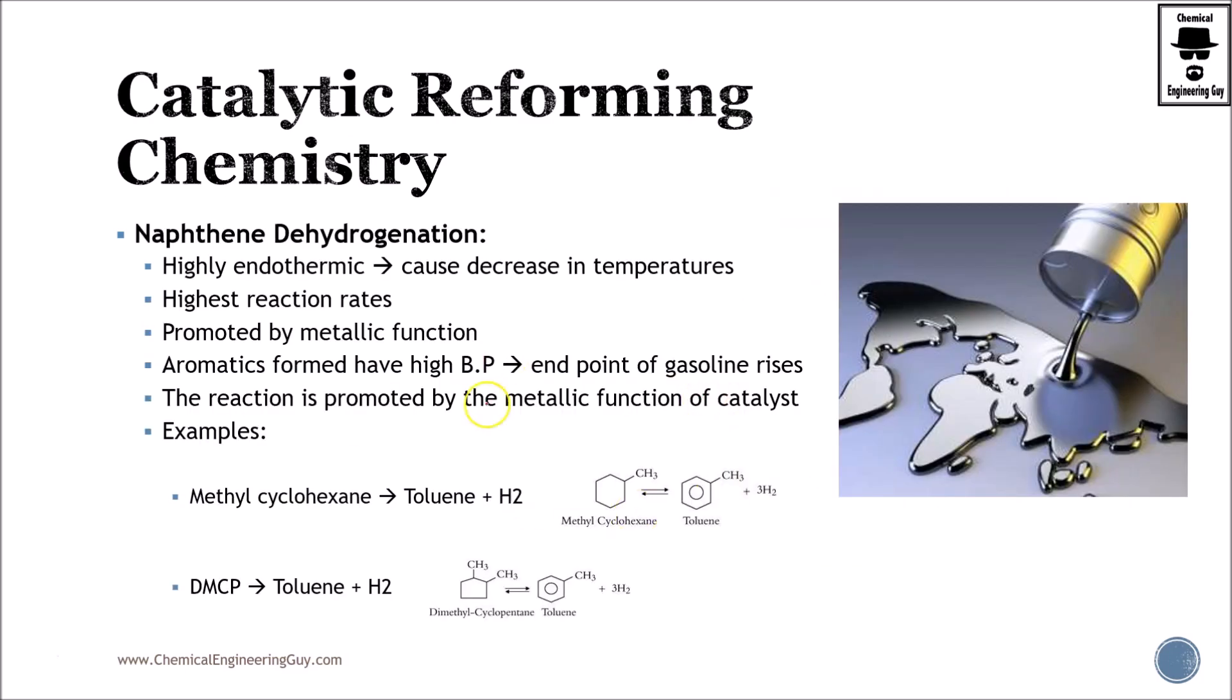Naphthene dehydrogenation is highly endothermic, meaning that you need to add heat. It decreases temperature, has the highest rate of reaction so this is very fast. Promoted by metallic function and aromatic forms have a very high boiling point which are very good for the gasoline. We are going to increase the endpoint of gasoline. Some examples are for instance methylcyclohexane converted to toluene or dimethylcyclopentane to toluene.